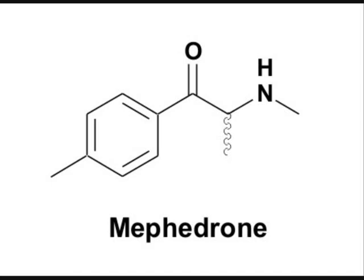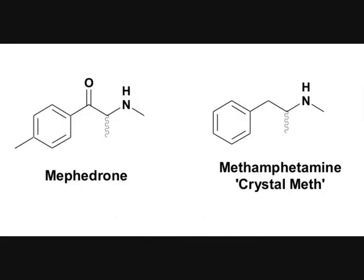Looking at the structure of Mephedrone, it's really very similar in structure to crystal meth, a well-known drug. Let's take a look at the structure of crystal meth and compare it to Mephedrone. Crystal meth simply has a methyl group missing from the aromatic ring and has no carbonyl group.